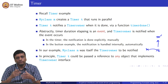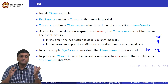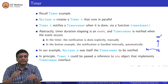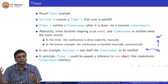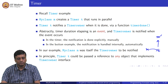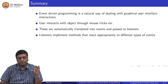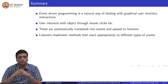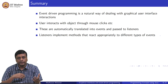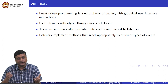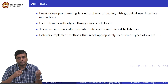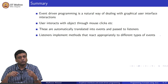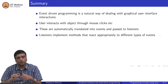In summary, event-driven programming is a very natural way of dealing with graphical user interface interaction. If we want programming language support for these kinds of applications — and so many applications now require this kind of interaction — programming it in terms of events and responses is very natural. The user interacts with an object such as a window using mouse clicks, touch, and so on; these are automatically translated into events and passed to the listeners, and the listeners implement methods that react appropriately to different types of events. What we will see next is how this is actually achieved within Java.